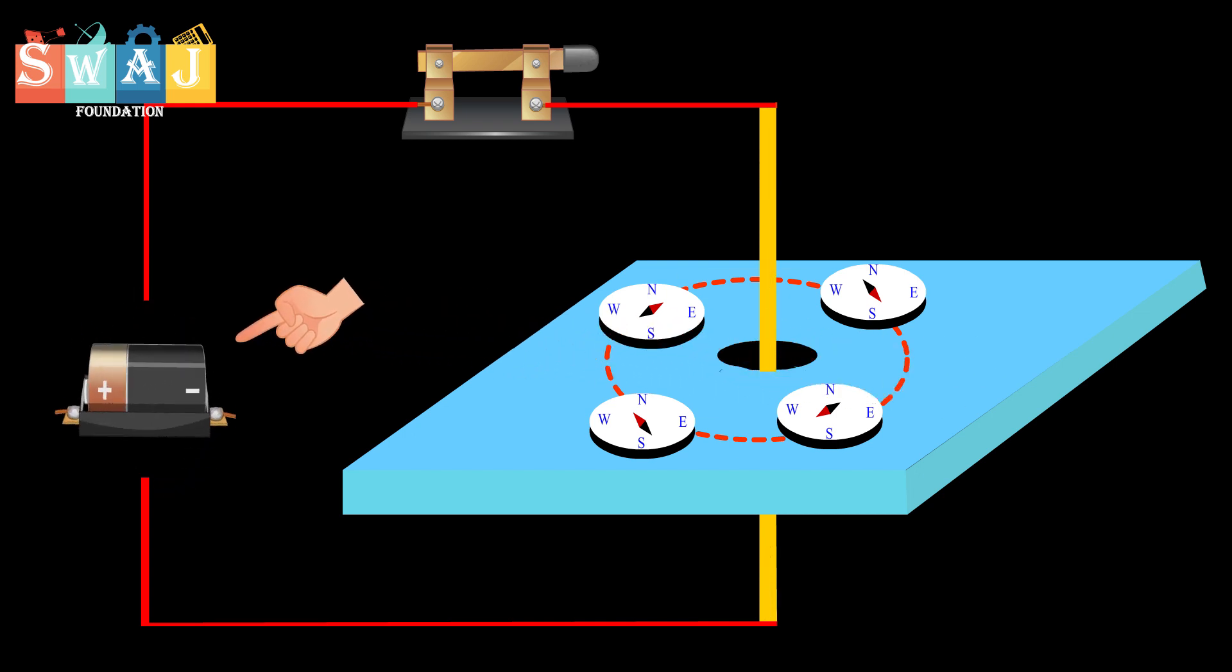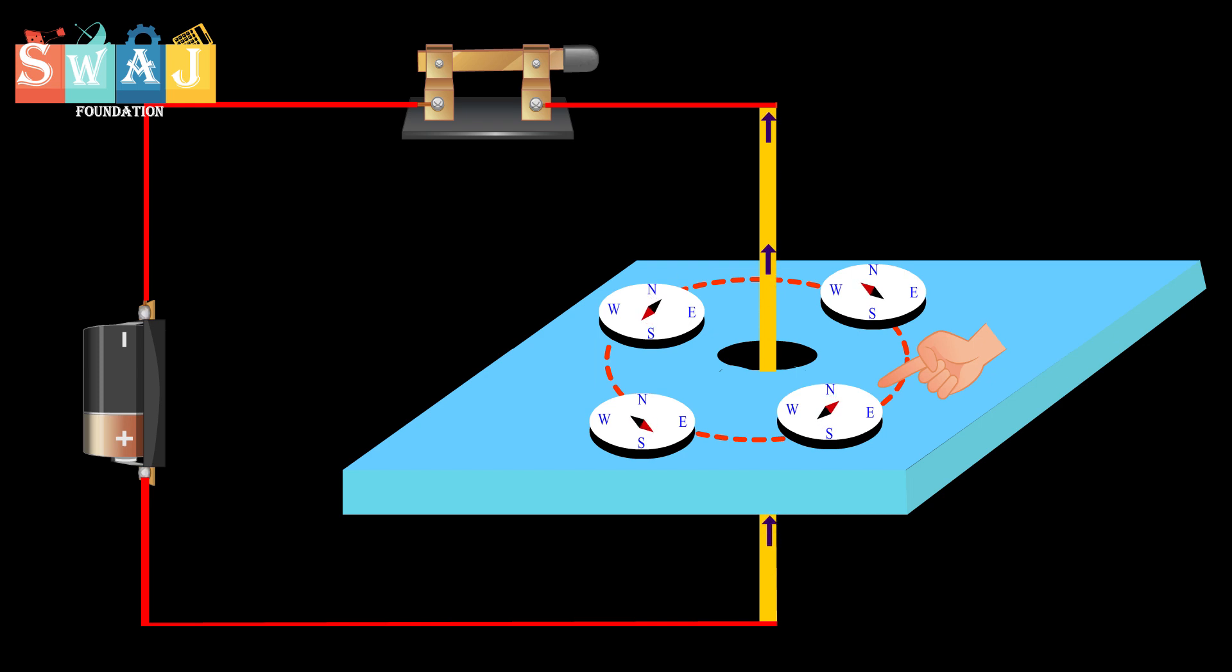And number three: the magnetic field lasts only as long as the current is flowing through the wire.